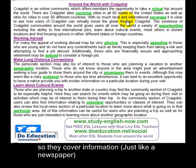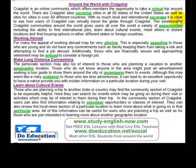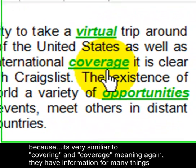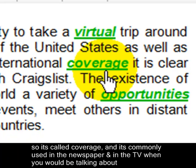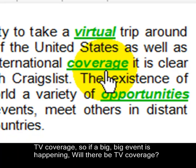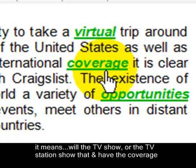With so much local and international coverage, it is clear to see how users of Craigslist can virtually travel the globe through Craigslist. Coverage is very similar to covering — it means they have information for many things. It's commonly used with newspapers and TV. For example, if a big event is happening, will there be TV coverage? That means will the TV station show that and have the coverage — will it be on TV?